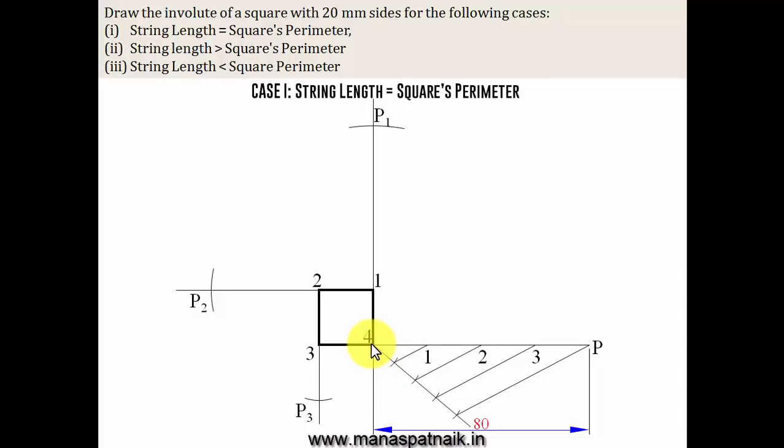And then you don't need to do anything for this guy, because point P will be somewhere here only, exactly at 4, coinciding with 4. Like this, point P or point P4, whatever. Both of them are absolutely same. Now, when you join all these points in proper sequence, this is exactly what you get, and this is what is known as an involute.